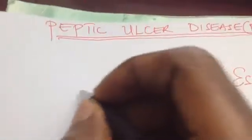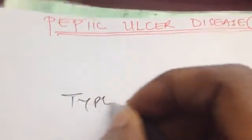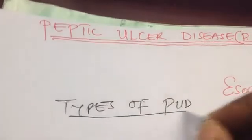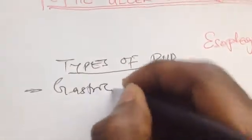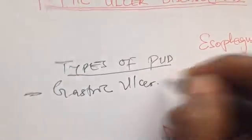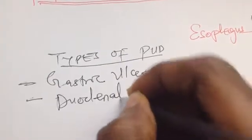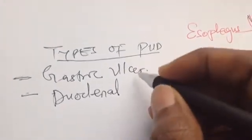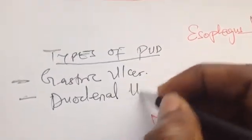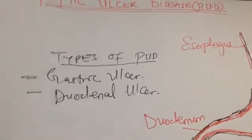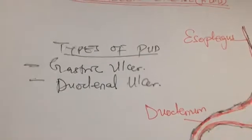The types of peptic ulcer disease are: gastric ulcer and duodenal ulcer, as already illustrated in the images. Now let us look at the causes — the etiology of ulcer.